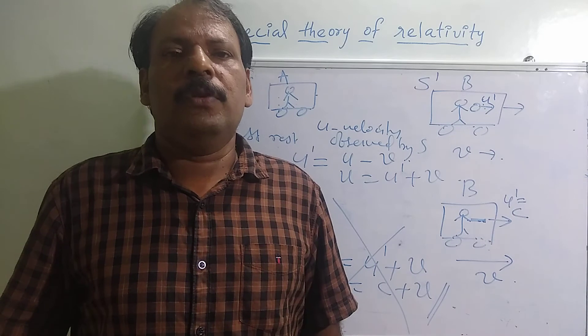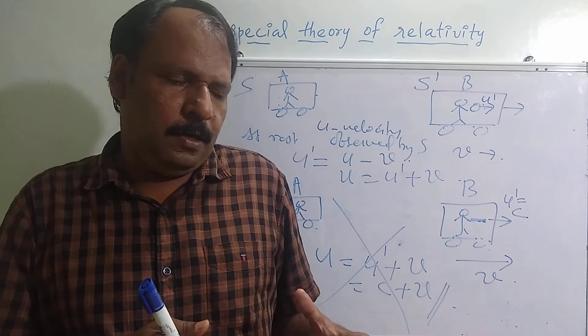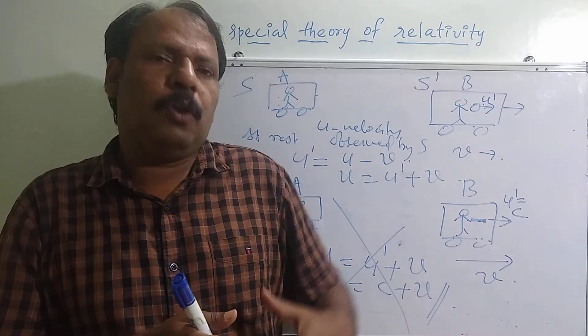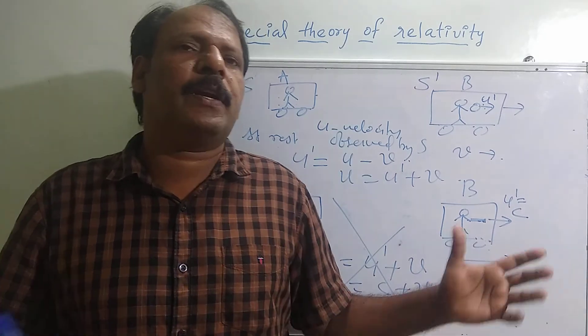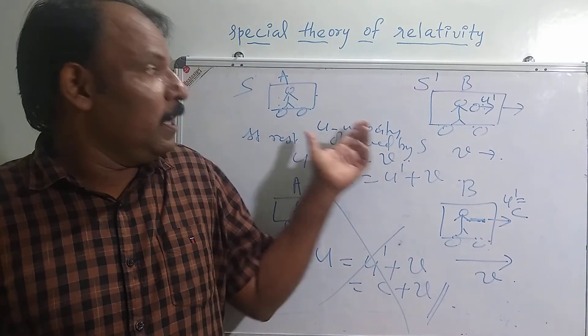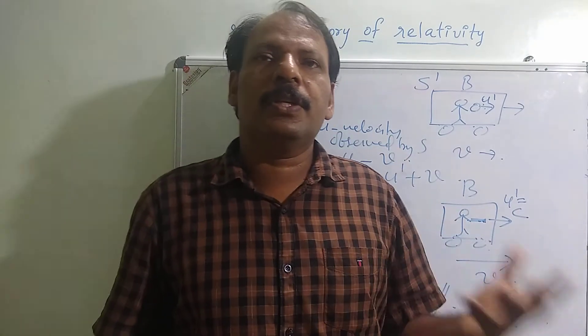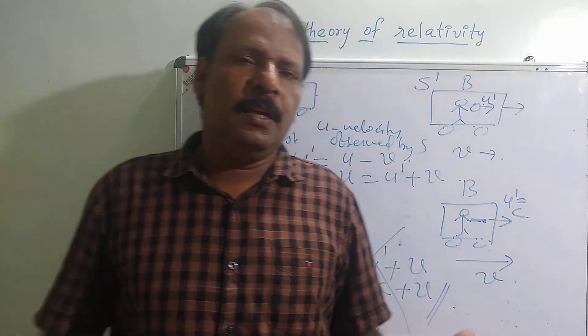They found that the velocity of light in different directions should change based on Galilean transformation — the velocity should change when the medium is moving.